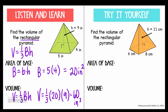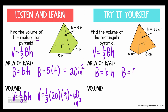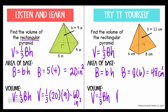Go ahead and pause the video and try the next one on your own. Find the volume of the rectangular pyramid. We're still looking at a rectangular pyramid, and all of our parts are labeled, so we're going to use the formula V equals one-third area of the base times the height. Since it's a rectangle, big B equals 8 times 6, which gives me an area of the base of 48 centimeters squared. Going back to my volume formula — one-third times 48 centimeters squared times the height — I find that the volume is 176 centimeters cubed.